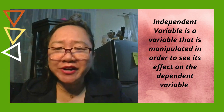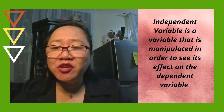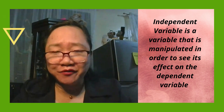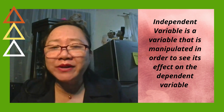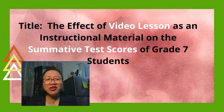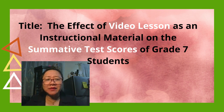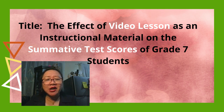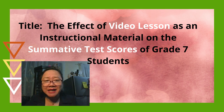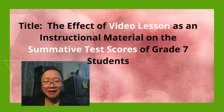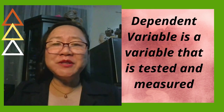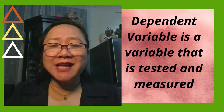Compare the results in order to identify the effect of visual lesson on the summative test scores. The frequency of visual lesson given to students is manipulated or changed in order to see its effect on the test scores. So, visual lesson is the independent variable. Independent variable is a variable that is manipulated in order to see its effect on the dependent variable. Summative test score is being tested and measured — this is our dependent variable. Dependent variable is a variable that is tested and measured.